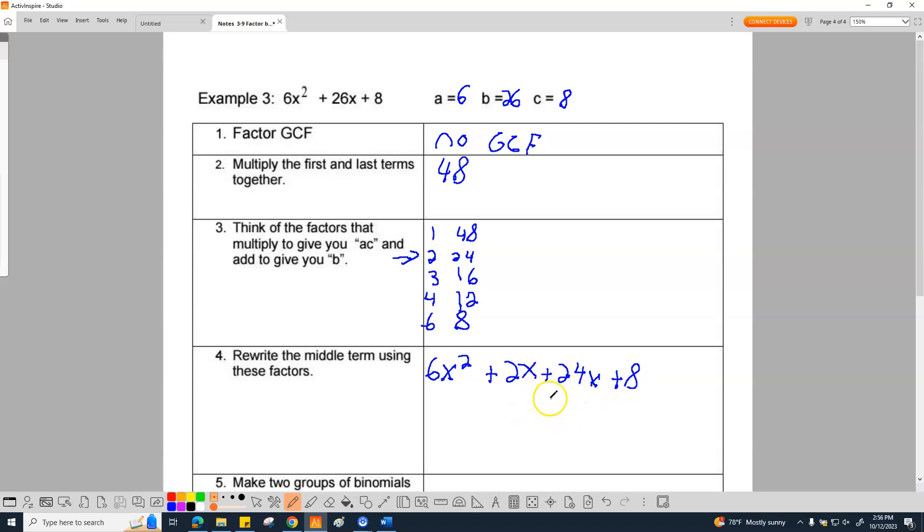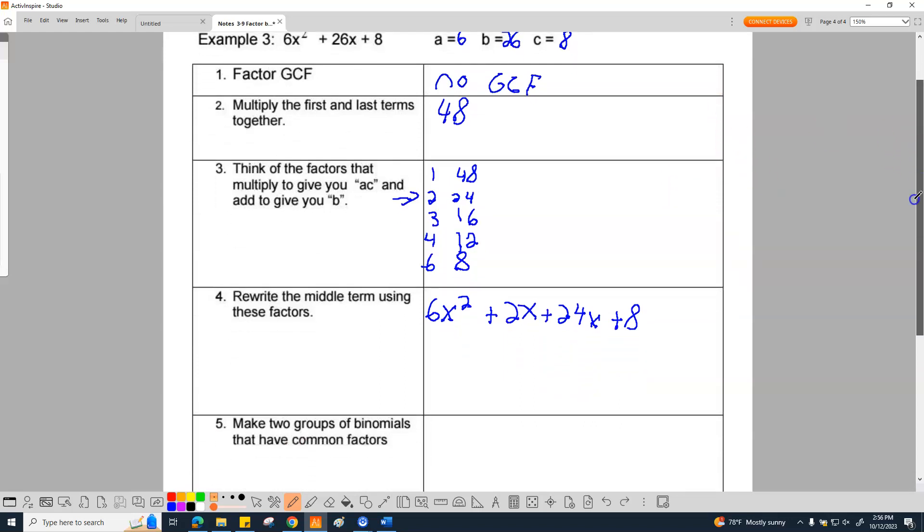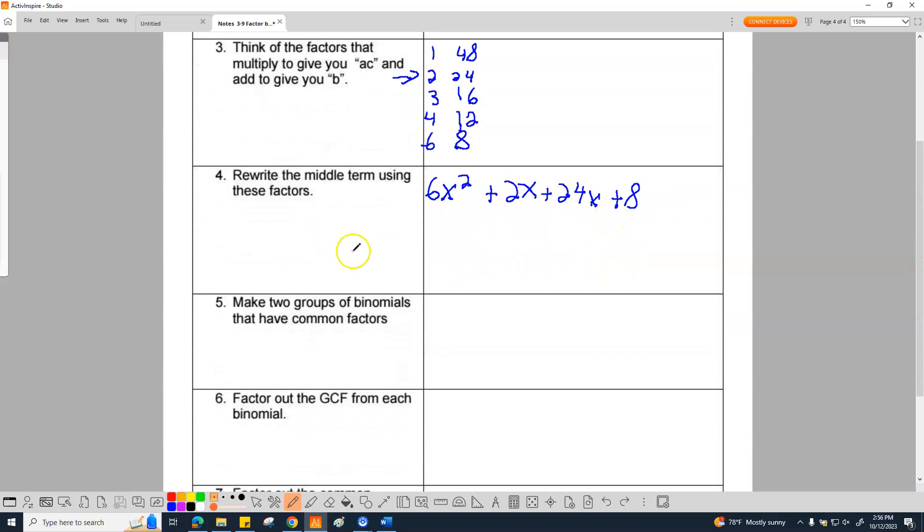Now these have multiple groupings that look like they work. So more than likely there's more than one way to do this correctly. I'll probably group the 6x squared and the 24x together. I'm going to rewrite this. It's going to be 6x squared plus 24x plus 2x plus 8. I'm going to group these. This one and then this one.